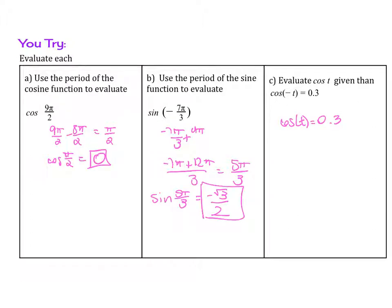A coterminal angle to 9π/2 is π/2. Cosine of π/2 is that same one from above: it is 0.